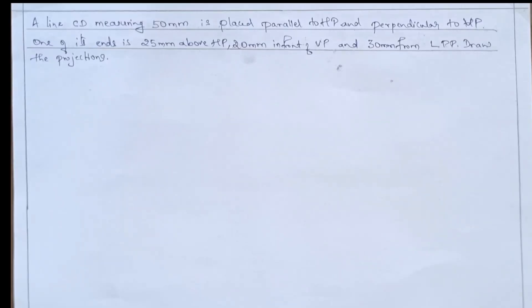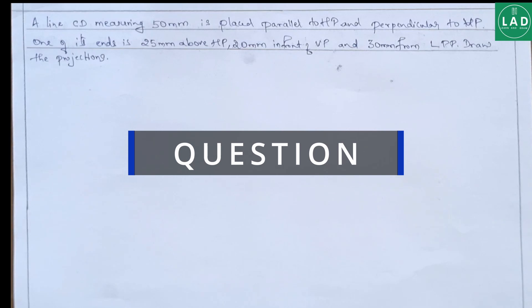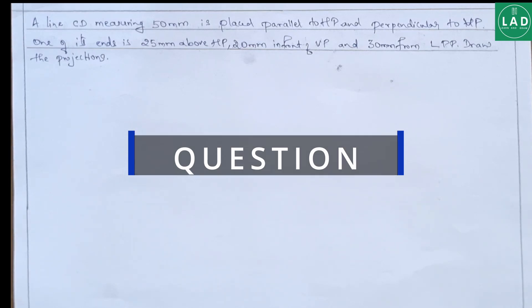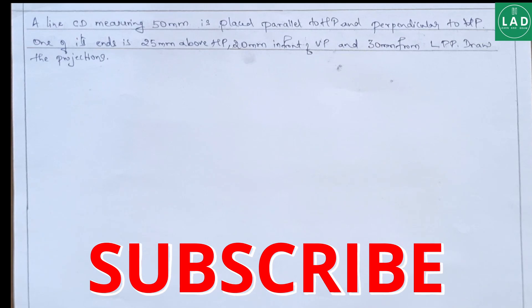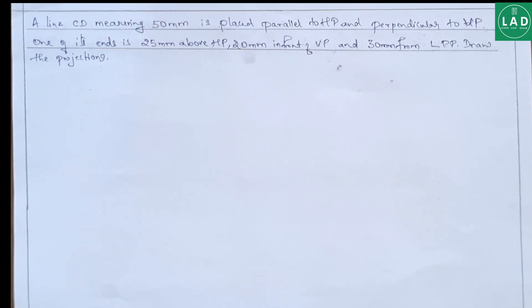Let us read the example. A line CD measuring 50 mm is placed parallel to HP and perpendicular to VP. One of its ends is 25 mm above HP, 20 mm in front of VP, and 30 mm from the left profile plane. Draw its projections.